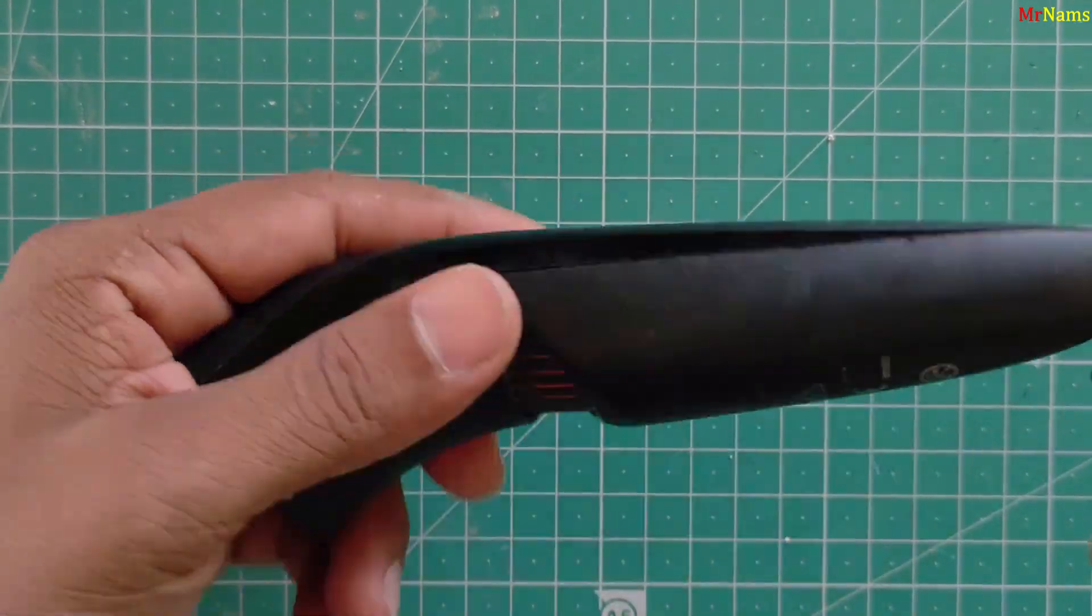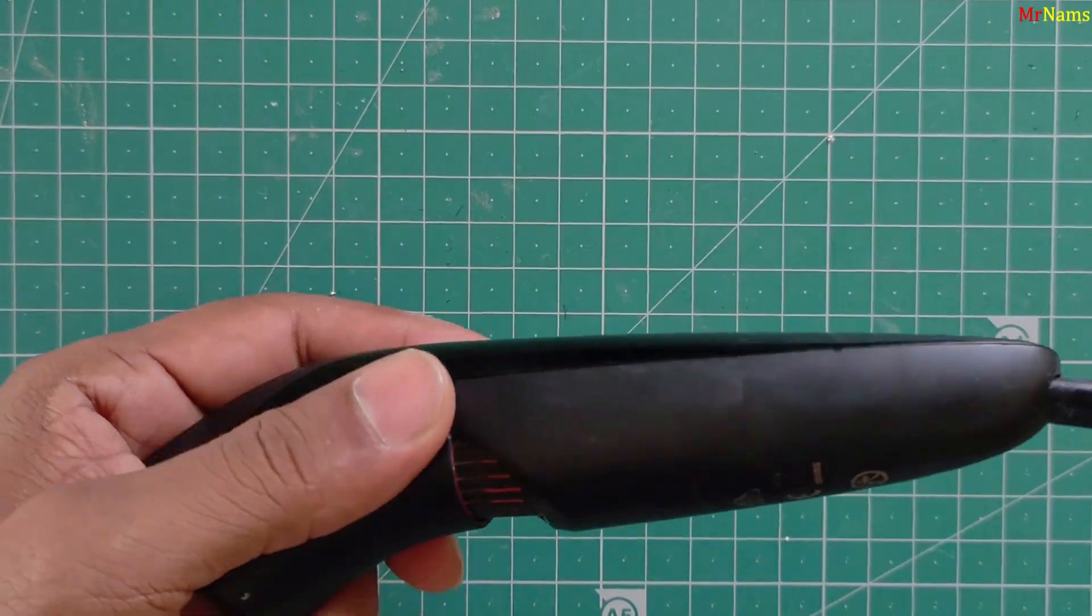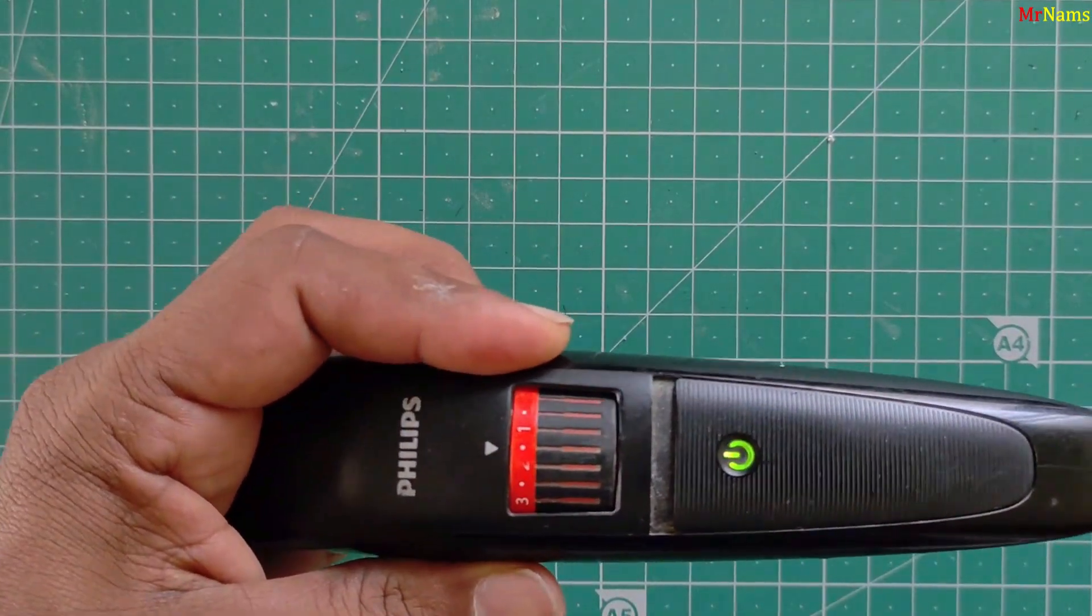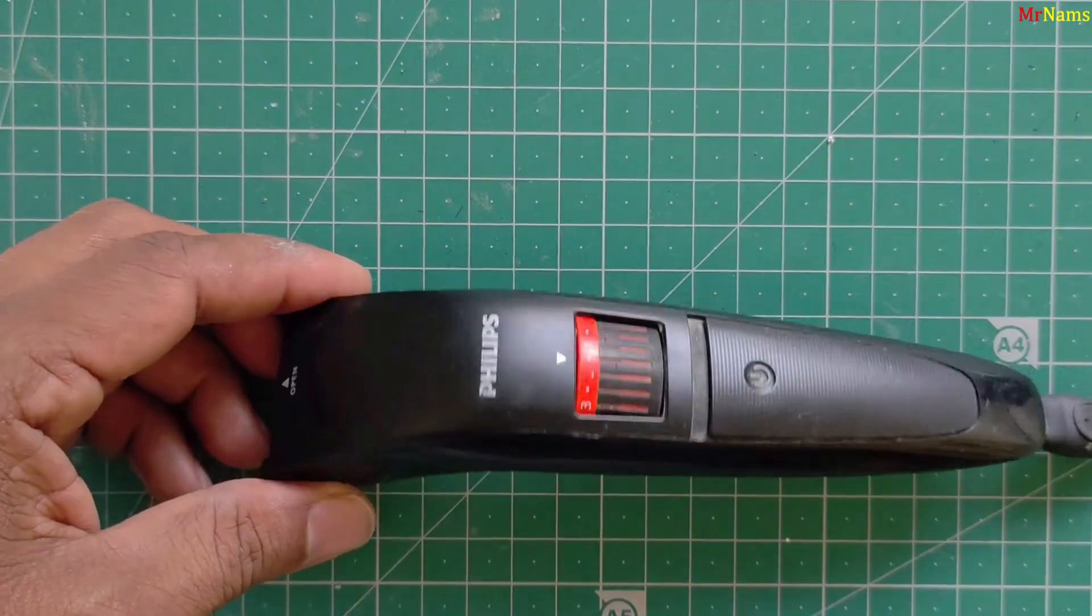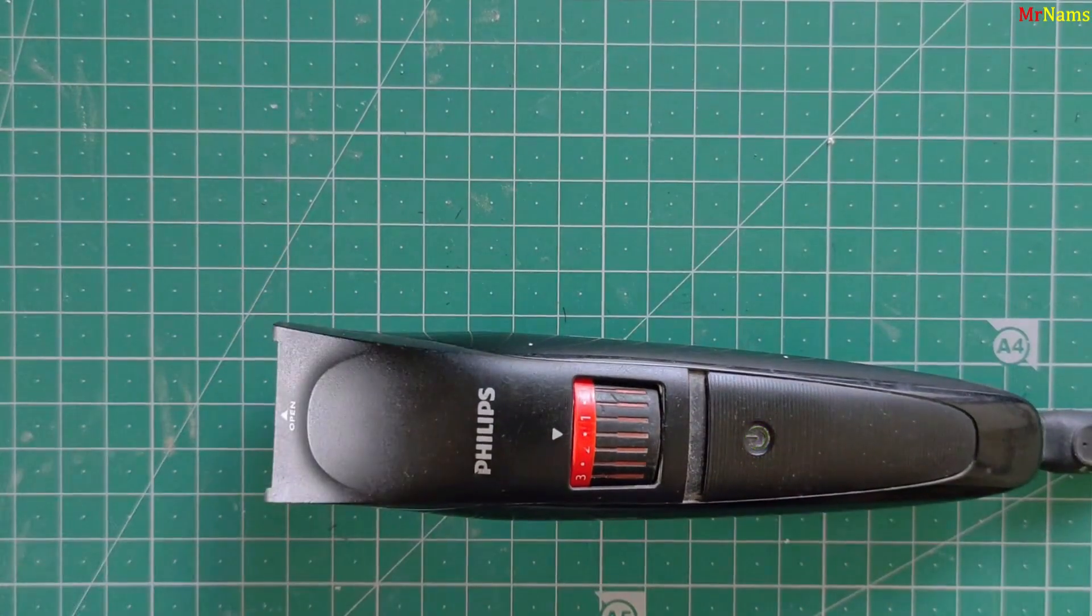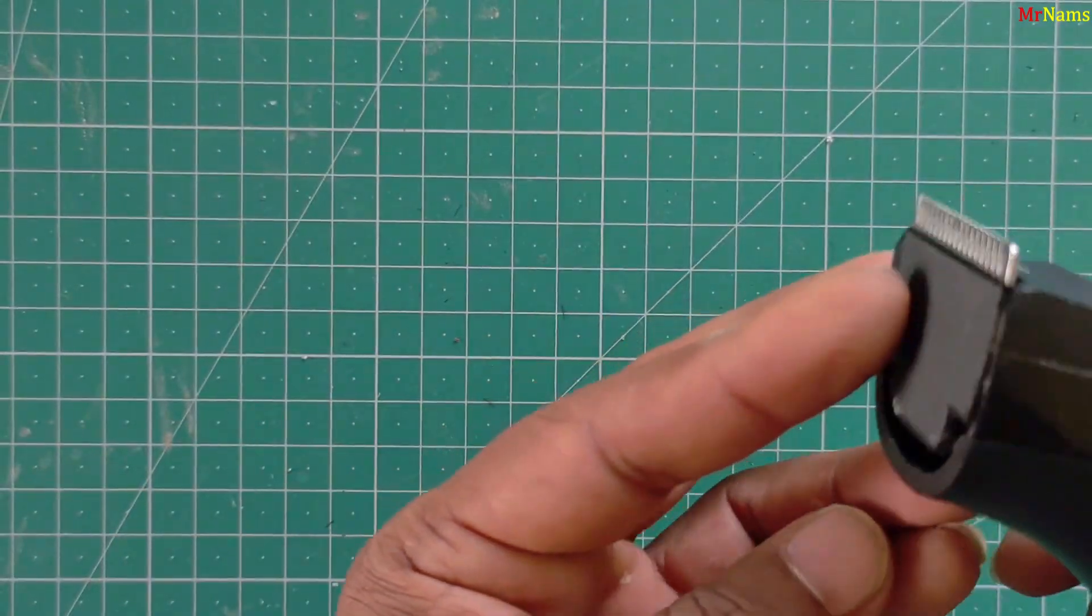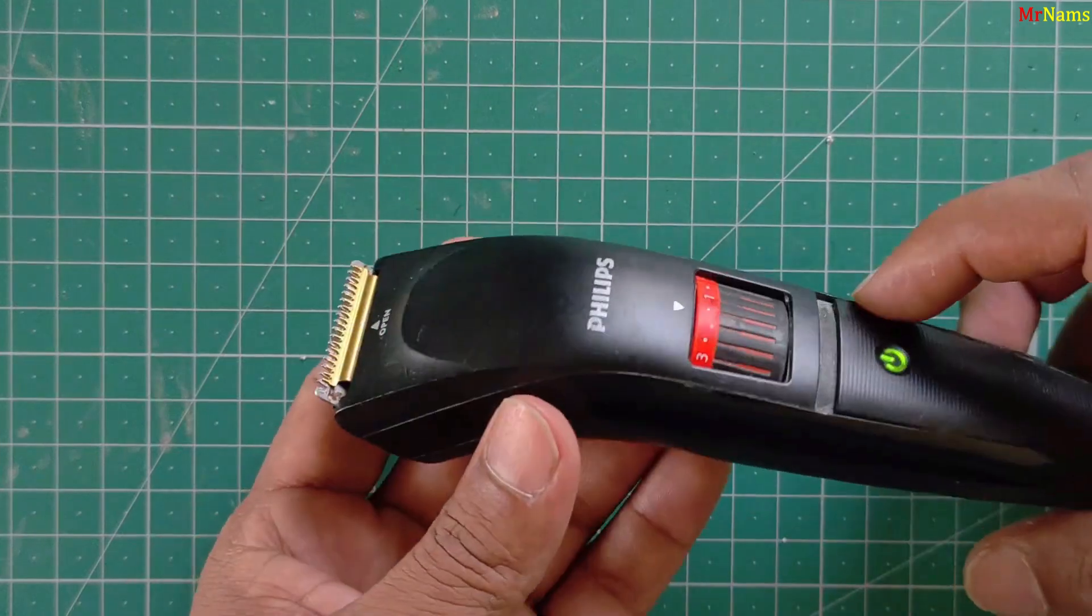Step 7. Final testing. Connect the charger to confirm the charging indicator lights up. Test the trimmer with and without the charger plugged in. If it works well in both cases, the battery replacement is successful.